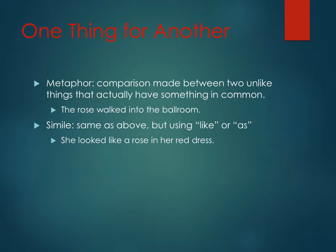Two more common figurative language tricks are metaphor and simile. They're very close to one another — basically making a comparison between two unlike things. You've got to be talking about two unlike things that could actually have something in common. The metaphor is just the comparison; the simile uses "like" or "as." Two related examples: "The rose walked into the ballroom" (metaphor), and "She looked like a rose in her red dress" (simile). In both cases, it really means a beautiful woman in a red dress walked into a ballroom. This is probably a very positive tone — describing someone as a rose, a flower with romantic and beautiful connotations. The overall tone is one of great beauty or admiration.